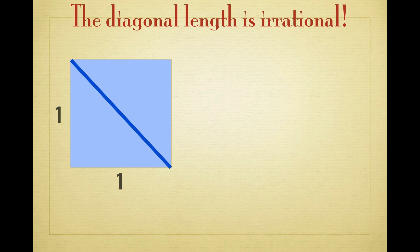So by Pythagoras, the length is square root of 2, and we assume it's a fraction p over q, where p and q have no common divisor.